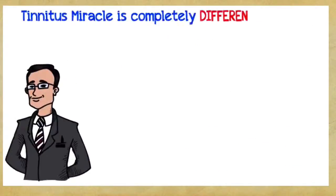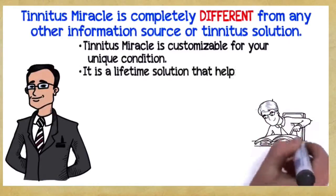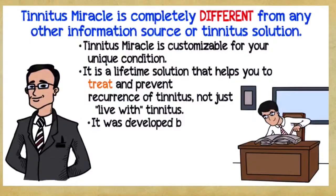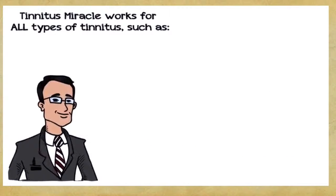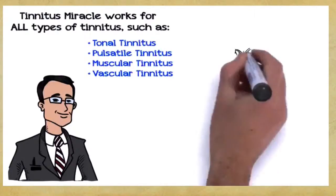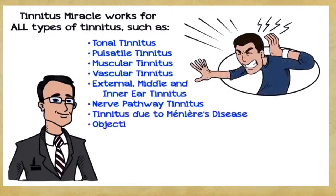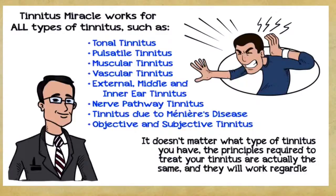Tinnitus Miracle is completely different from any other information source or tinnitus solution. Here's why: Tinnitus Miracle is customizable for your unique condition. It's a lifetime solution that helps you treat and prevent recurrence of tinnitus, not just live with tinnitus. It was developed by a real tinnitus sufferer. It's an interactive program that shows you exactly how to overcome tinnitus. Tinnitus Miracle works for all types of tinnitus, such as tonal tinnitus, pulsatile tinnitus, muscular tinnitus, vascular tinnitus, external, middle, and inner ear tinnitus, nerve pathway tinnitus, tinnitus due to Meniere's disease, objective and subjective tinnitus. It doesn't matter what type of tinnitus you have, the principles required to treat your tinnitus are actually the same, and they will work regardless of your age or background.